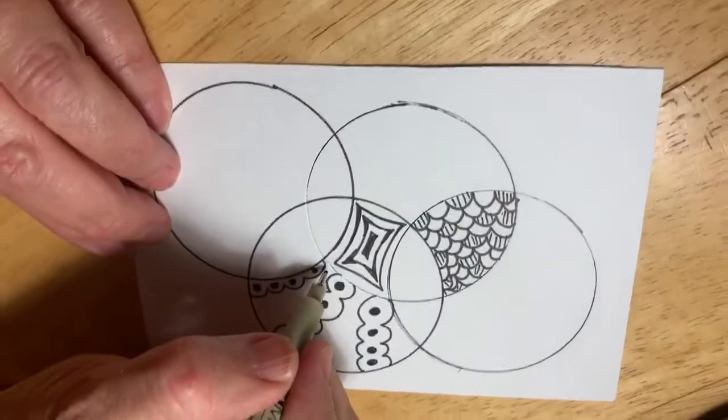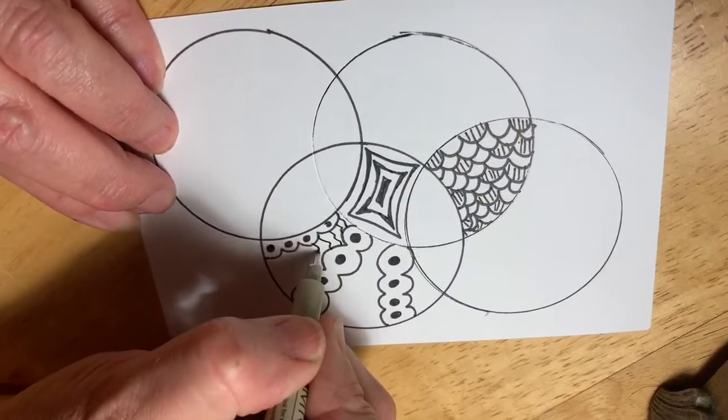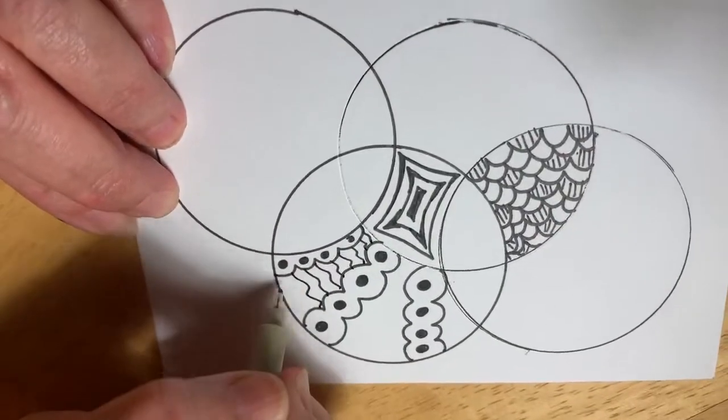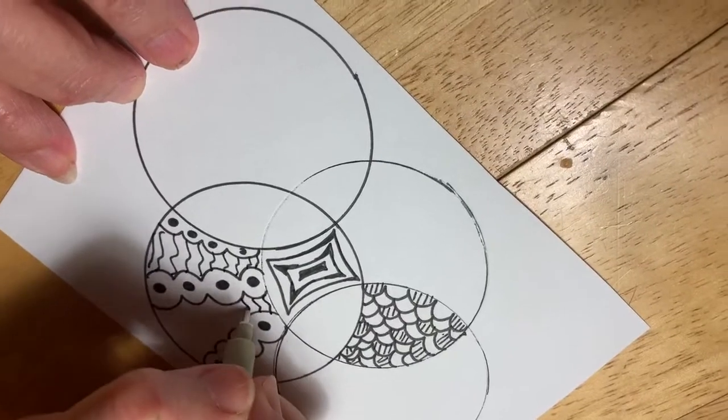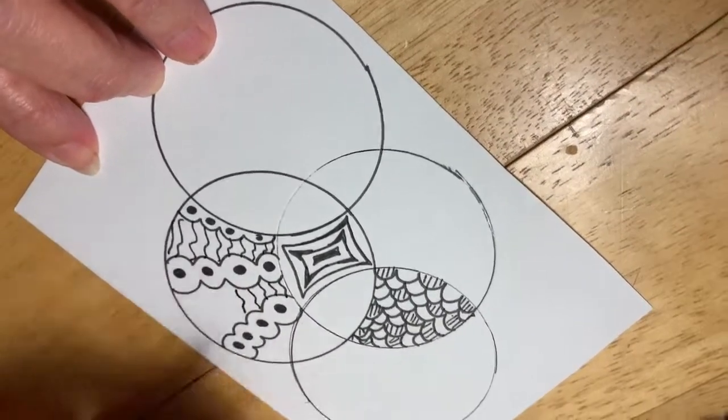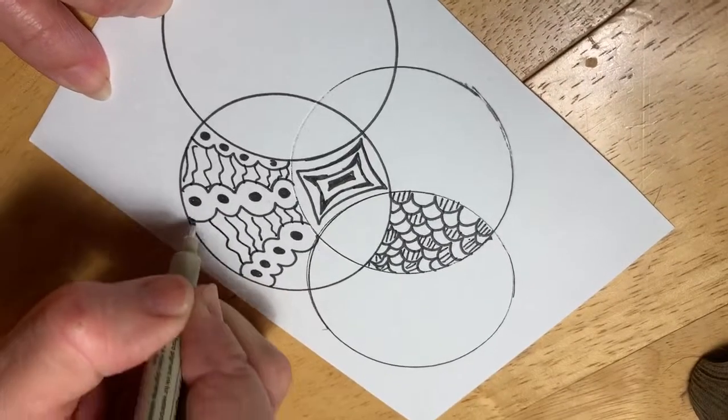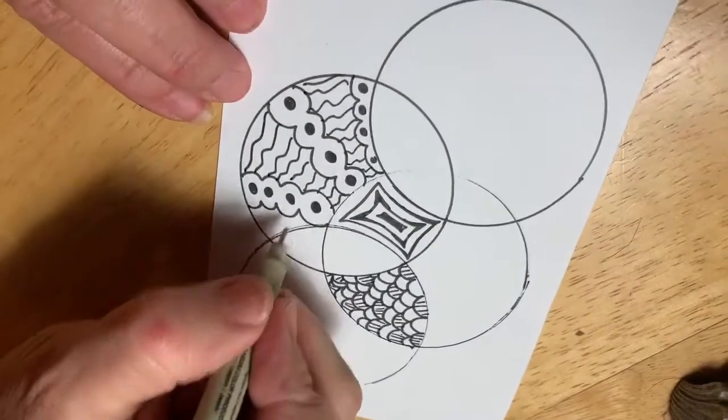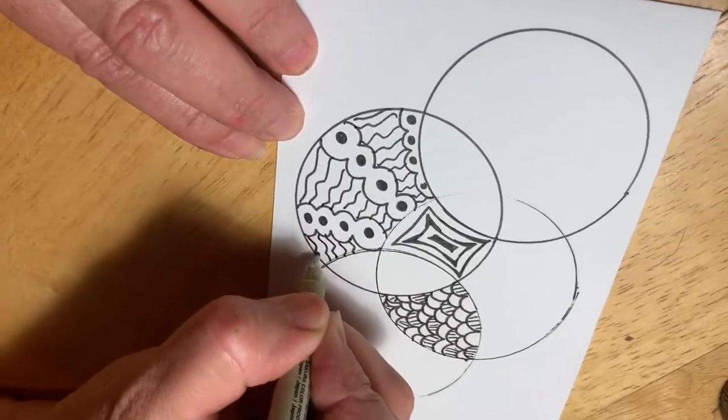And we can come in here and let's add some little wavy lines just to fill that little space in. And we want to carry it over here. And remember, you can turn the page as you go. It makes it easier to do things.